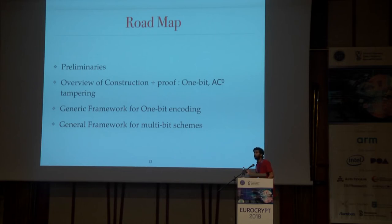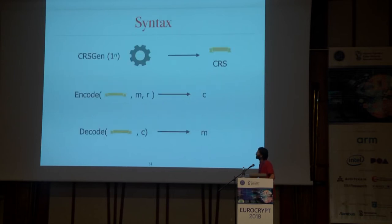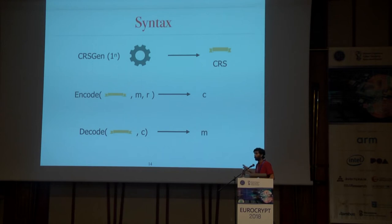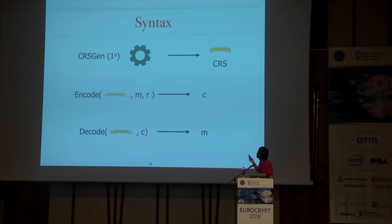Now I will talk about some preliminaries. We are going to be in the CRS model. We have a CRS-gen algorithm which outputs a CRS — a common random string or common reference string. The encoding algorithm takes the CRS, a message M, and randomness, and outputs a codeword C. The decoding algorithm takes the CRS and the codeword as input and outputs the message M.